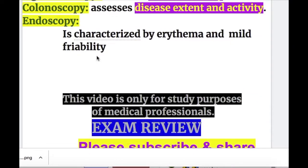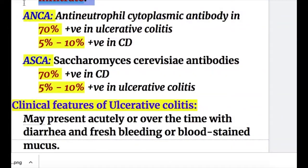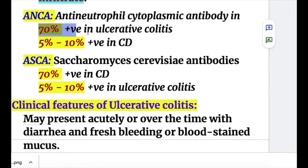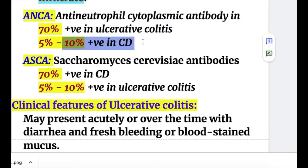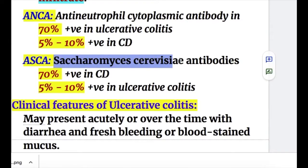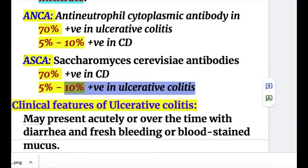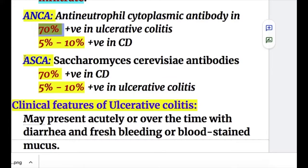Serologic markers of ulcerative colitis: ANCA — anti-neutrophil cytoplasmic antibody — is positive in 70% of cases of ulcerative colitis, while ASCA is positive in 70% of Crohn's disease. So these two tests are essentially opposite to each other.